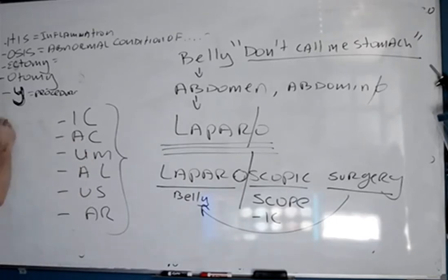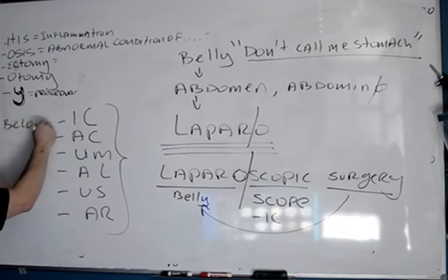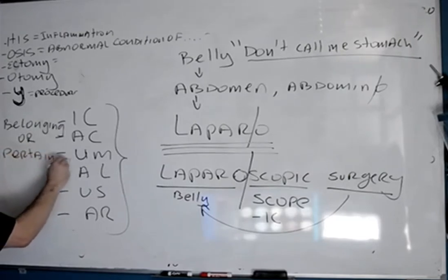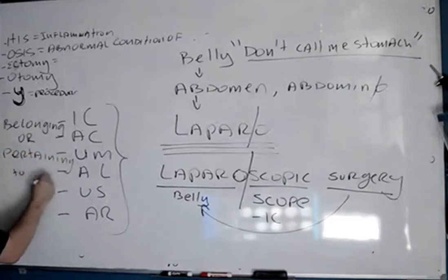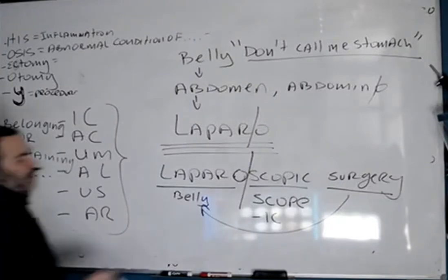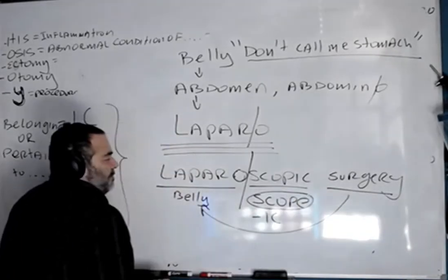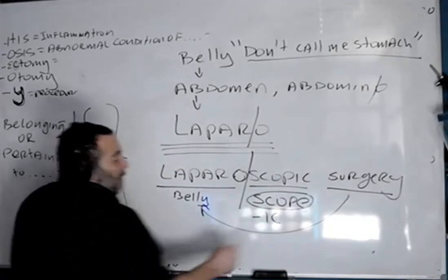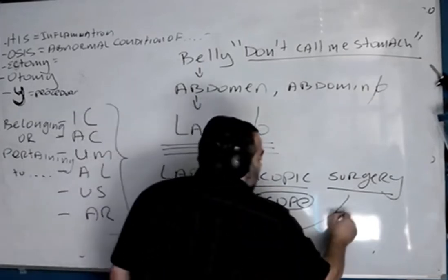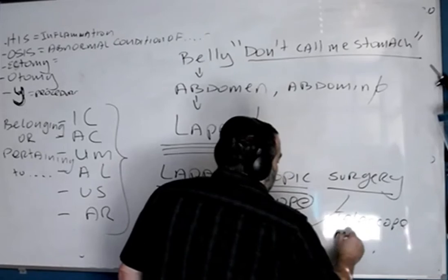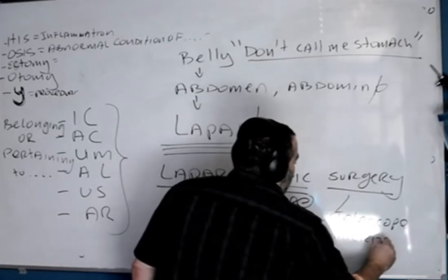All of these suffixes mean the same thing: belonging to, or pertaining to. Now the question is, what is the word scope? You have seen words like telescope and microscope. What do you use a telescope for? To see — what? Space, stars, right?